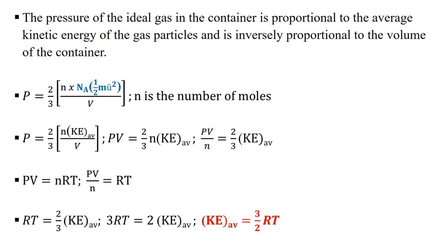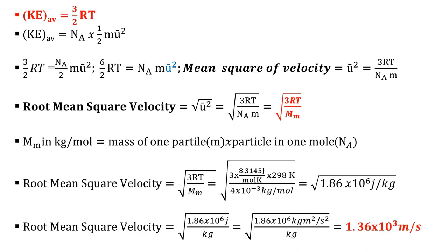We now have average kinetic energy = (3/2)RT, and also average kinetic energy = N_A × (1/2) × M × μ². Setting these equal and solving: N_A × (1/2) × M × μ² = (3/2)RT. Multiplying through, μ² = 3RT / (N_A × M), where μ² is the mean square velocity.